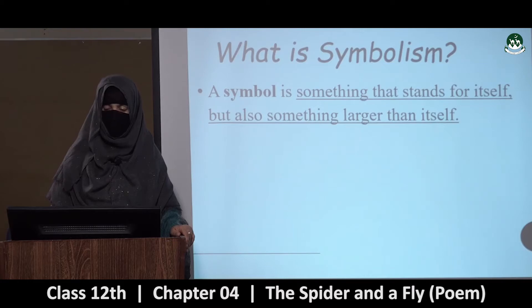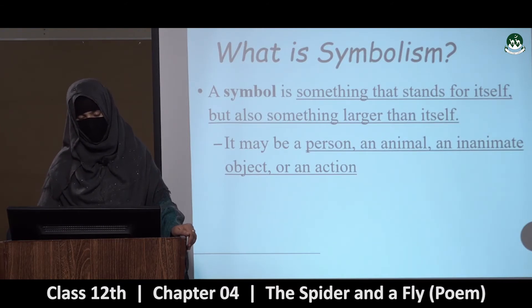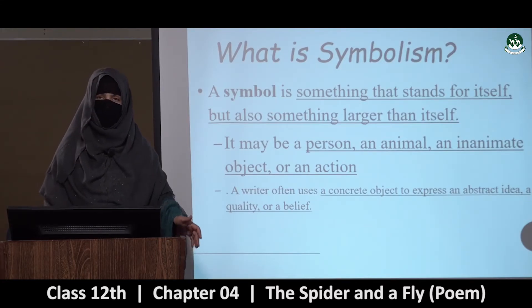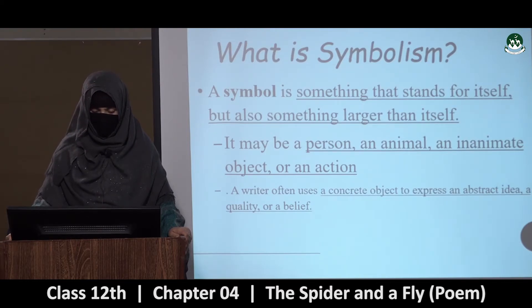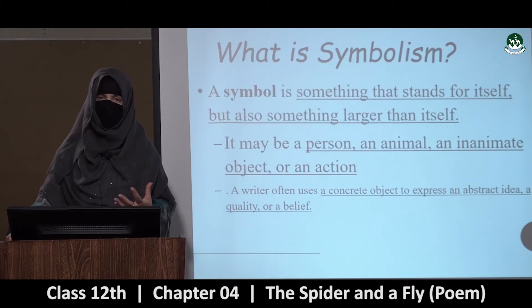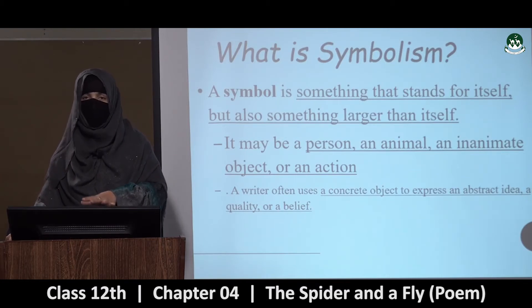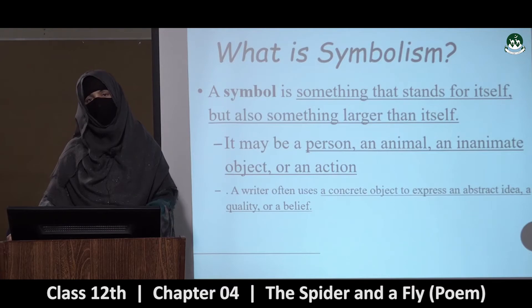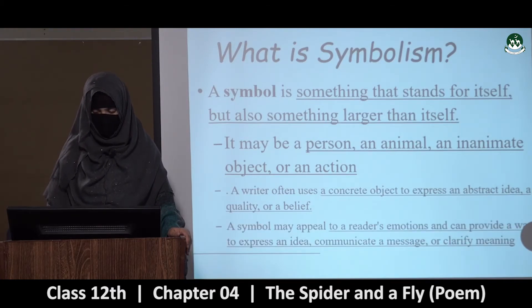Ab symbolism kya hai? A symbol is something that stands for itself but also something larger than itself — woh apne liye bhi hai lekin woh imply kar raha something larger hai. It may be a person, an animal, an inanimate object or an action. A writer often uses a concrete object to express an abstract idea, a quality or a belief. Symbolism mein jaise ke truth — a writer often uses a concrete object to express an abstract idea.